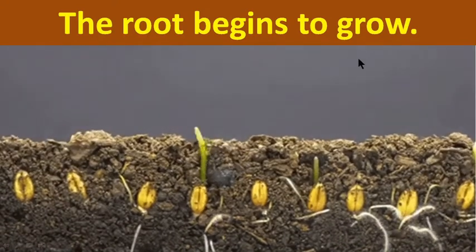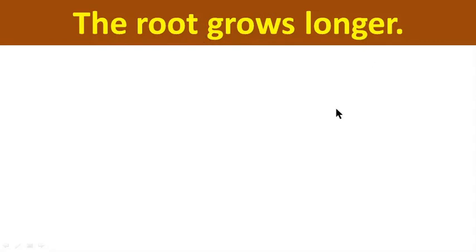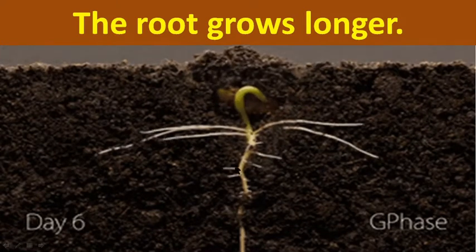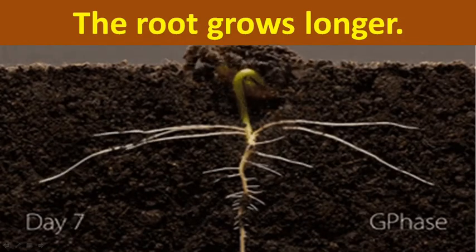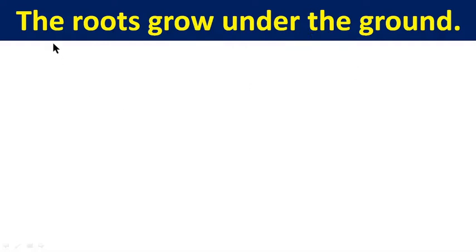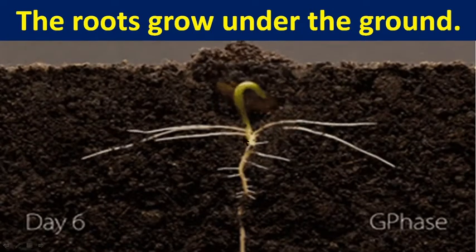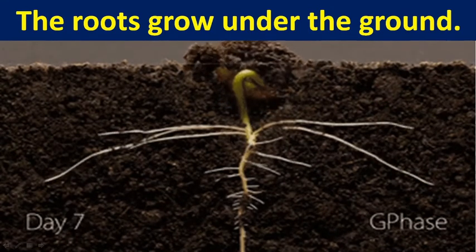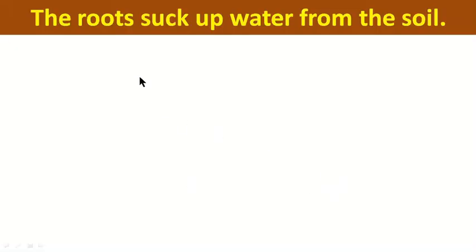At first, the root begins to grow. The root grows longer — from smaller to longer. The roots grow under the ground. We can see that the root is growing under the ground.